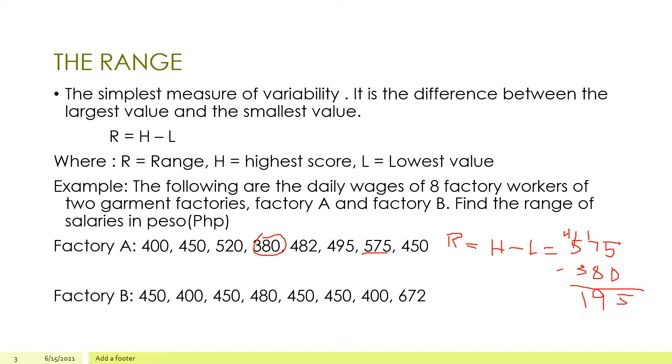What about Factory B? In Factory B, we have 450, 400, 450, 480, 450, 450, 400, 672. So the highest here is 672 minus the lowest is 400. 672 minus 400. So 2 minus 0 is 2, 7 minus 4, and then 2. The range is 272.